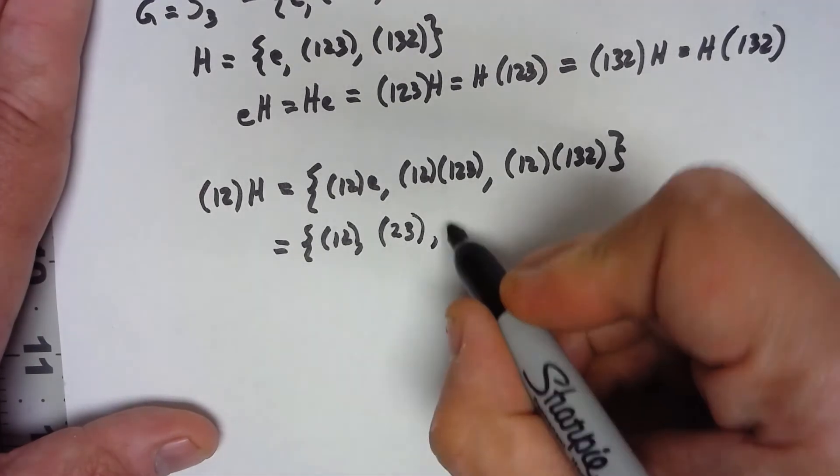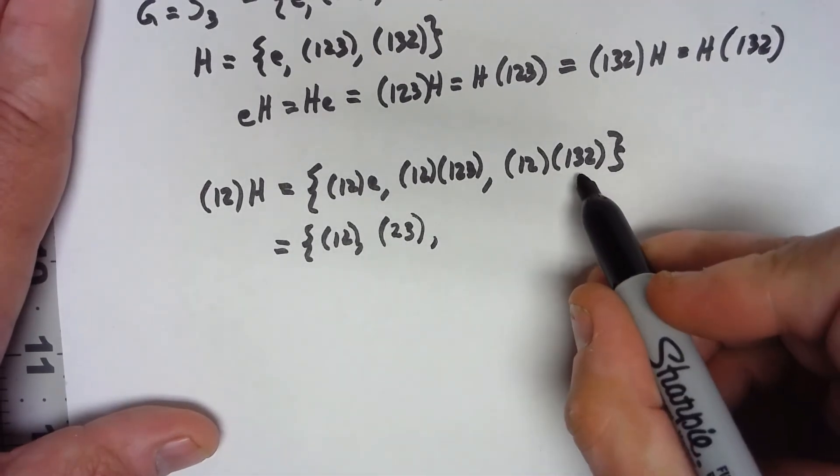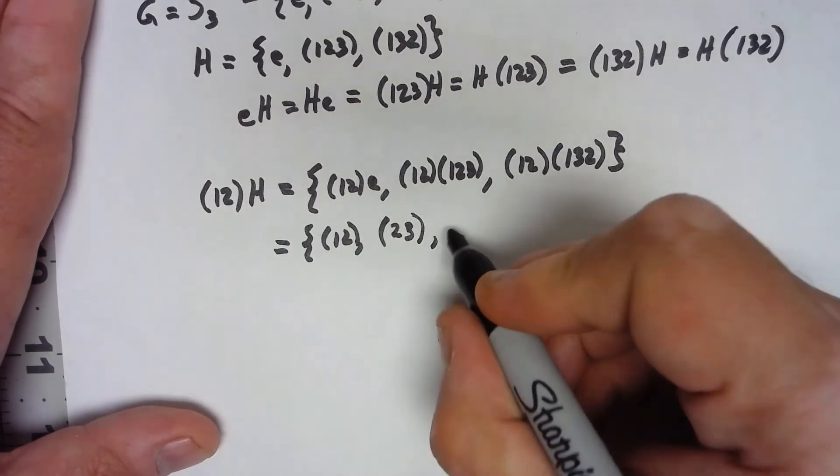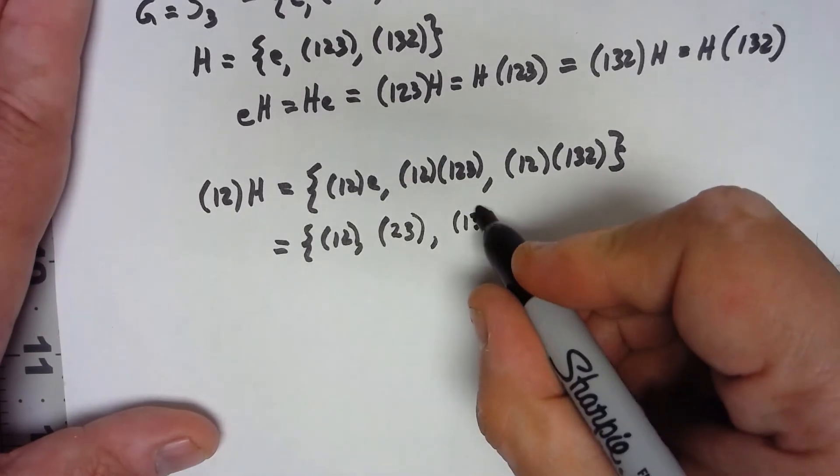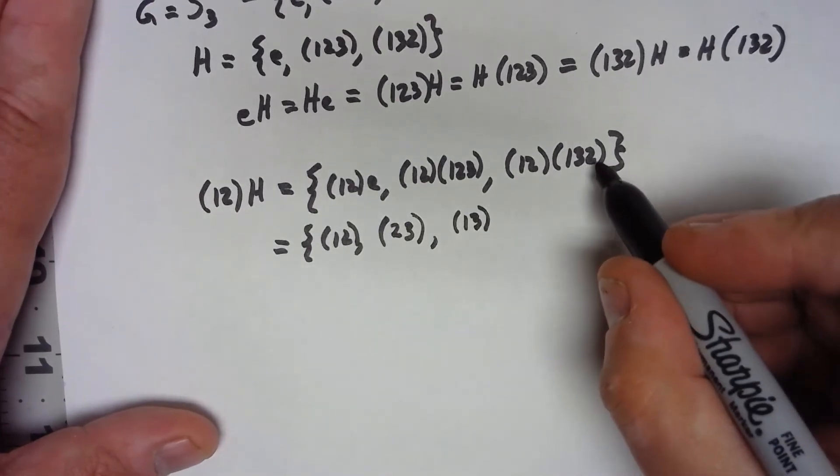Over here, 1 goes to 3, 3 goes to 2 which goes to 1, 2 goes to 1 which goes to 2, so 2 is fixed. So that gives me (1,3).